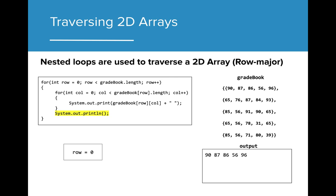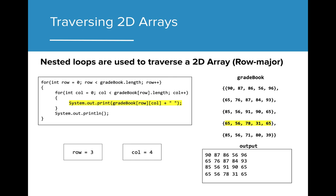The inner loop ends and a println is called to start the next array on the next line in the console. The outer loop now increases the value of row by 1, allowing the gradebook to access the array at index 1. The inner loop executes again and initializes col. Now index 0 in the second array, which is value 65, is printed to the console. This for loop continues to iterate until every value in the second array is accessed and printed. As row continues to increase, each set of values will be printed to the console until the length of the 2D array is reached.